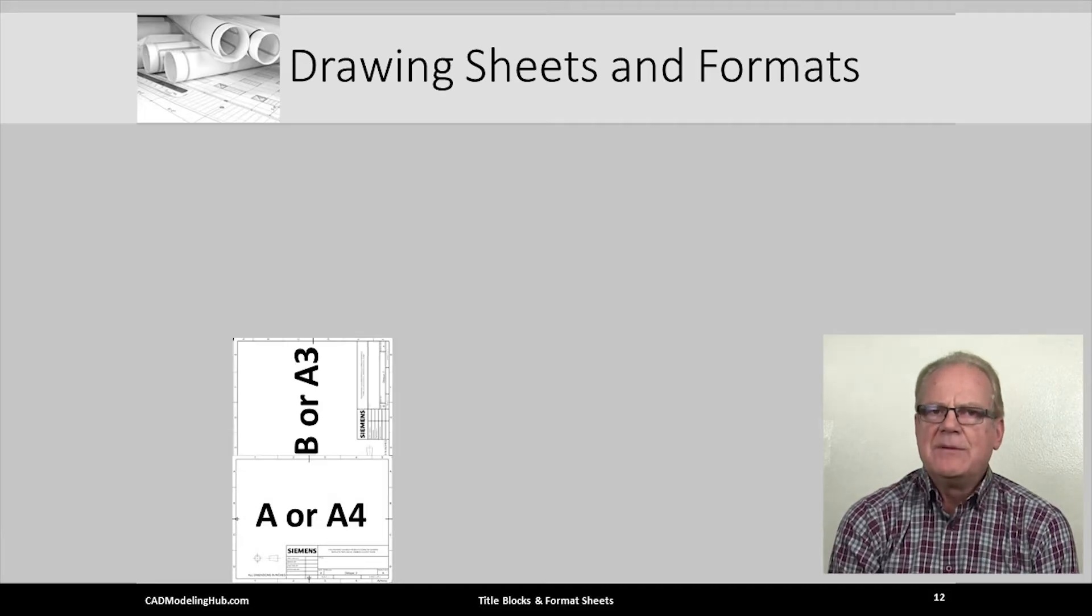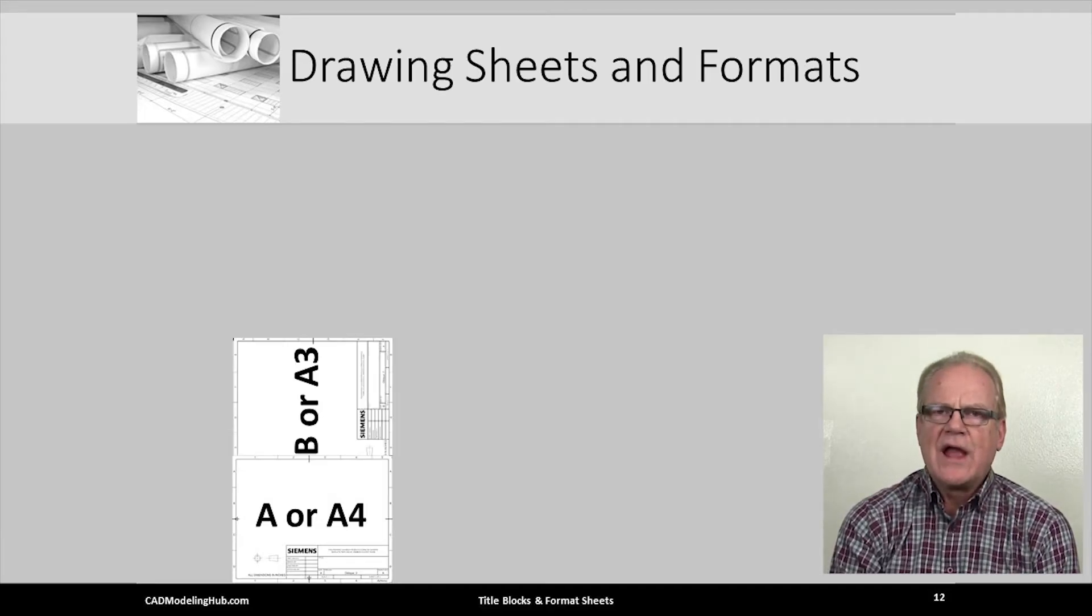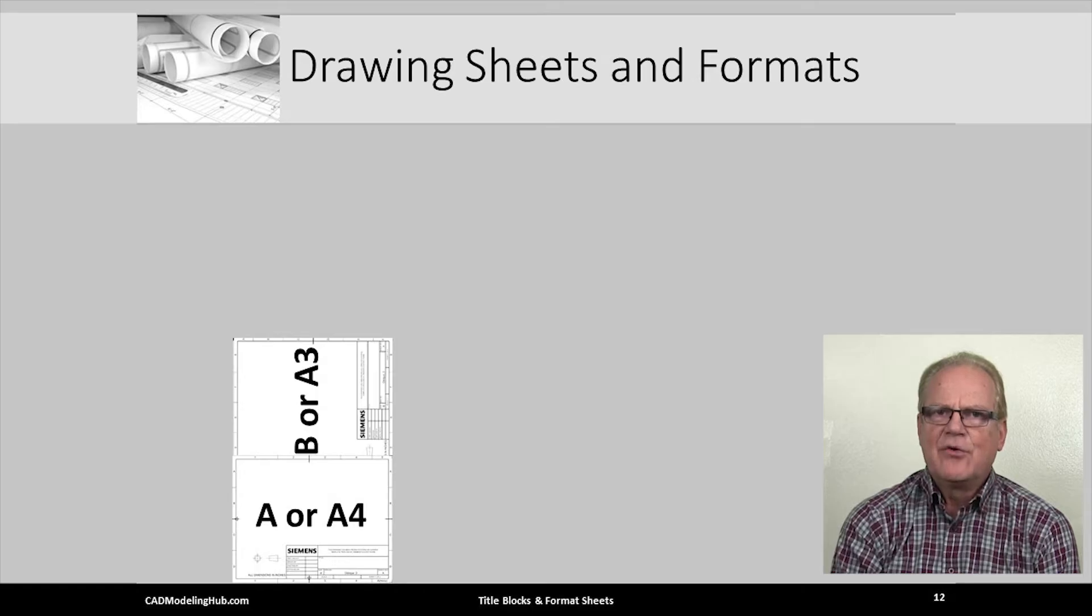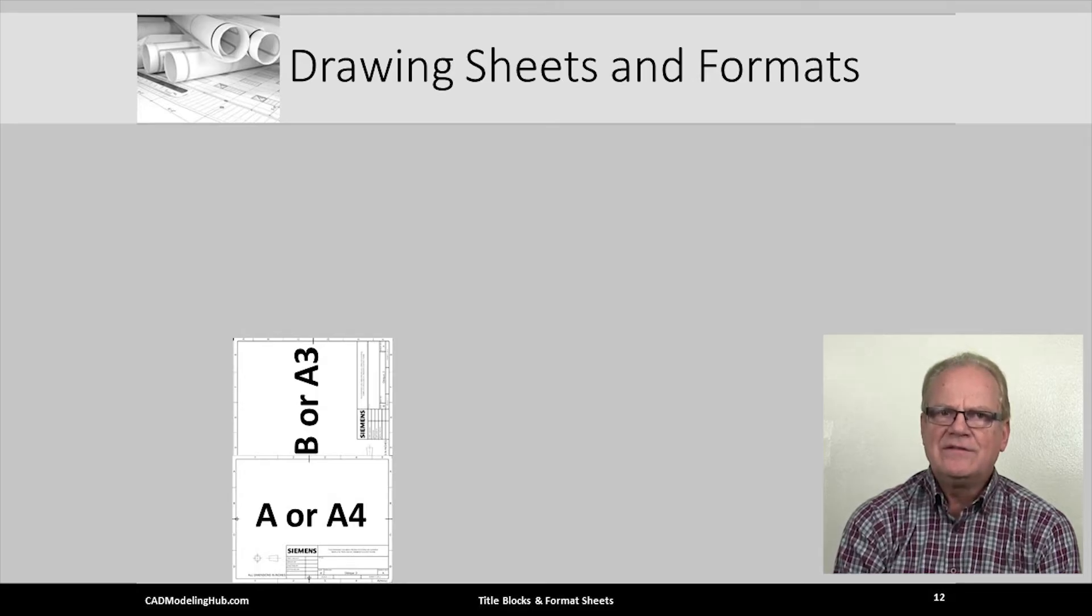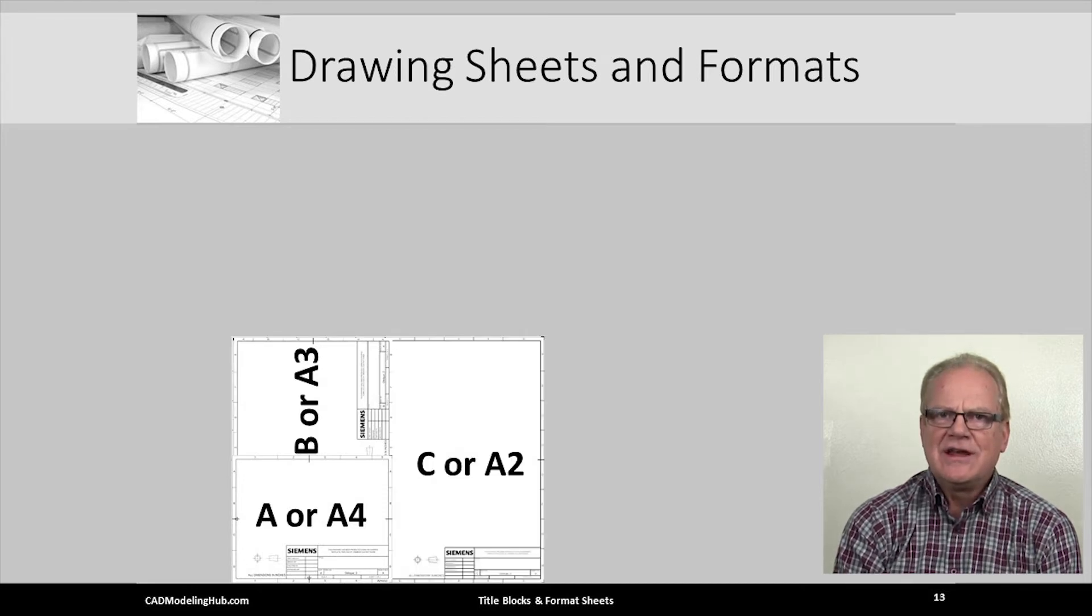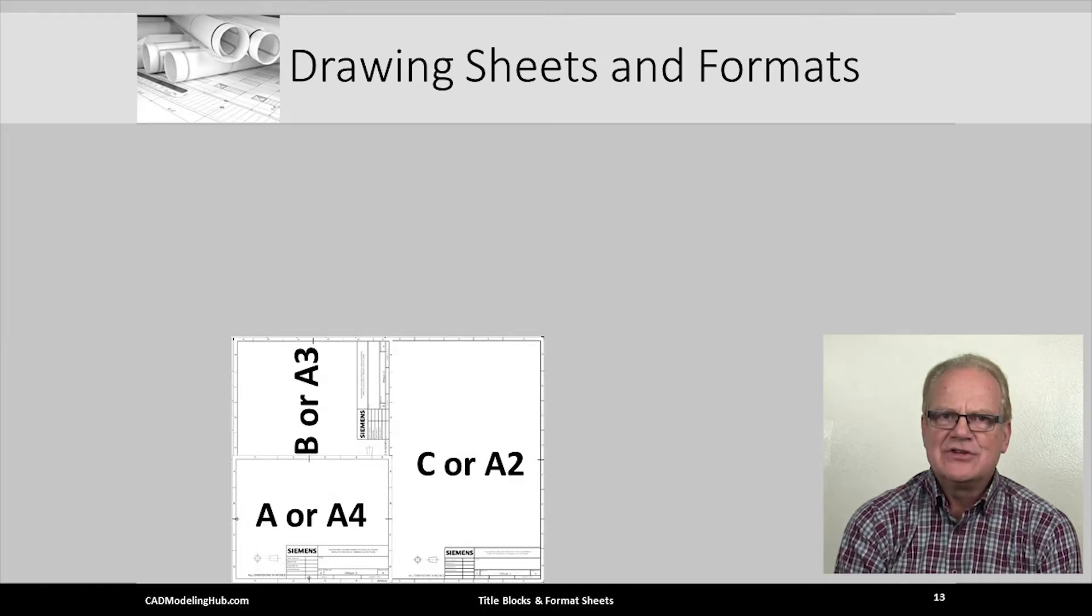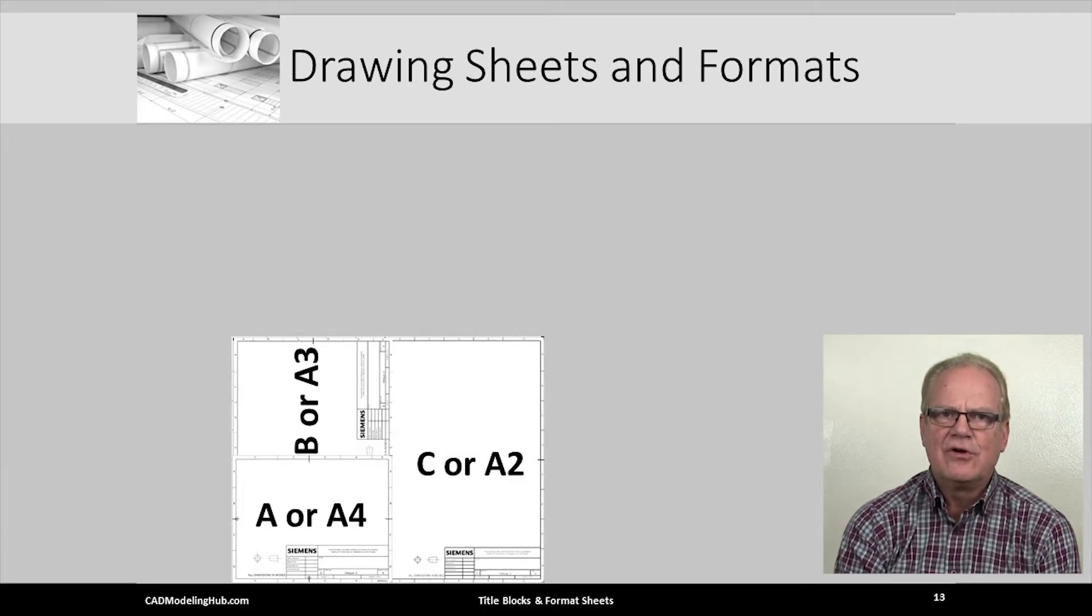An ASME B or ISO A3 size drawing sheet is twice the size of an A or A4 sheet of paper. In similar fashion, it takes two B size sheets of paper to make an A2 size drawing sheet.